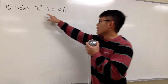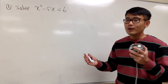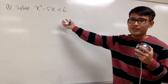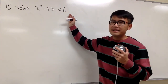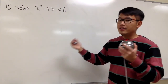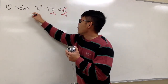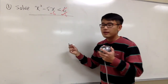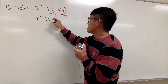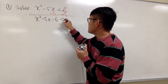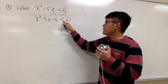This is the first one we are going to solve: x squared minus 5x is less than 6. Whenever we are dealing with a quadratic inequality, we want to factor. But before we factor, we have to make sure one side is equal to 0. So we subtract 6 on both sides to get x squared minus 5x minus 6 less than 0. The inequality stays the same.